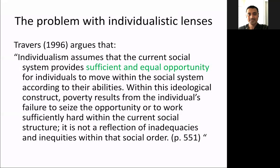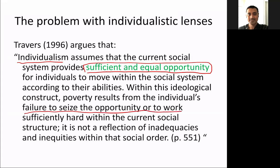Why is this the case? Travers in 1996 argues that individualism assumes that the current social system provides sufficient and equal opportunity. This is the key phrase I want you to always think about. The assumption is made that everyone has sufficient and equal opportunity for individuals to move within the social system according to their abilities. If you have studied any sociology, you can recognize that this is inherently false — but that's the assumption with individualism. Within this ideological construct, poverty results from the individual's failure to seize the opportunity or to work sufficiently hard within the current social structure. It is not seen as a reflection of inadequacies and inequities within that social order.